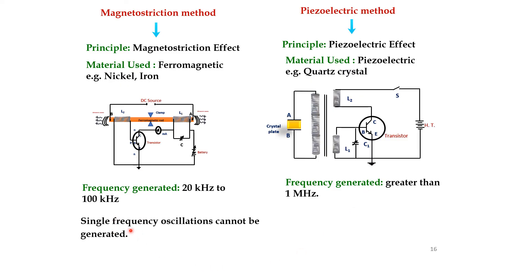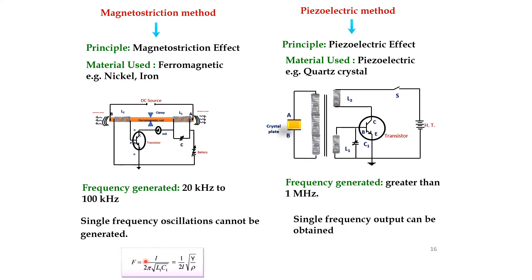In the magnetostriction method, single-frequency oscillations cannot be generated, whereas that is possible with the piezoelectric method. The frequency equation for the magnetostriction method is: F = 1 / (2π√(L1C1)) = 1 / (2L√(Y/ρ)), where L is the length of the ferromagnetic rod. In the piezoelectric method, the frequency equation is: 1 / (2π√(L1C1)) = 1 / (2T√(Y/ρ)), where T is the thickness of the quartz crystal.